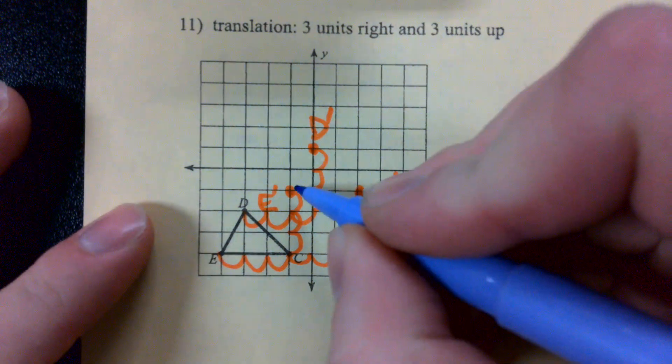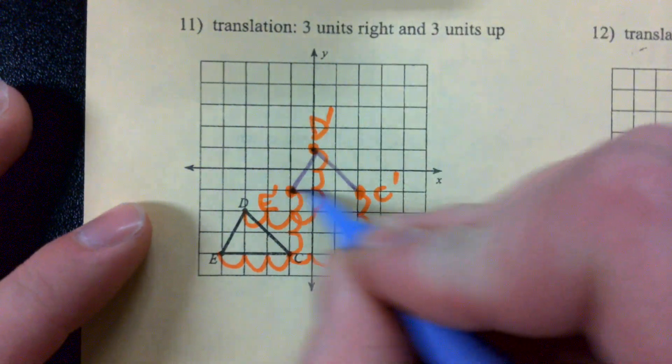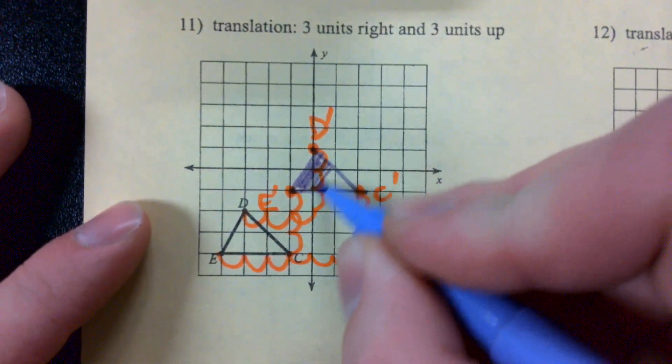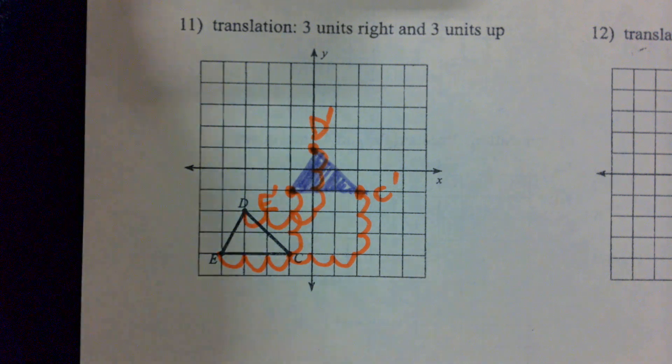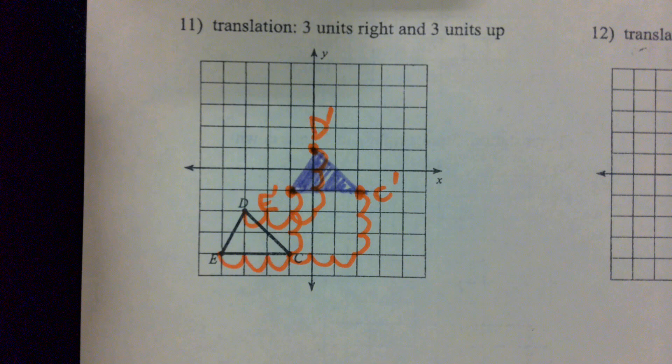All right. We once again connect up that triangle. You can shade it in if you want to. You don't have to. And there's our image. C prime, D prime, E prime. As long as you're counting the spaces correctly and you're going in the right direction, you should be good to go with translating shapes. All right.